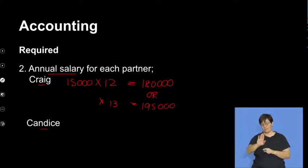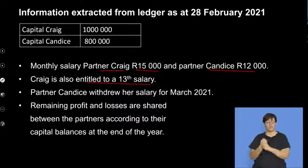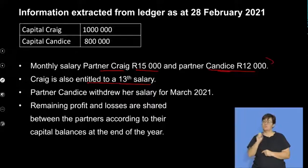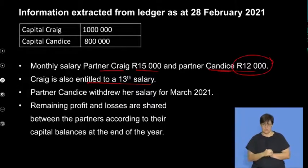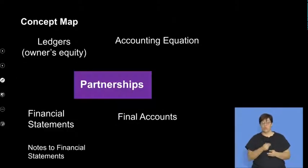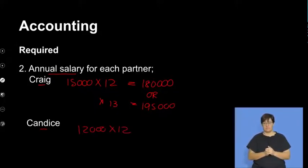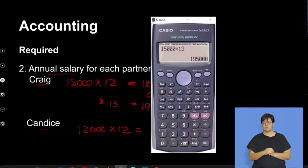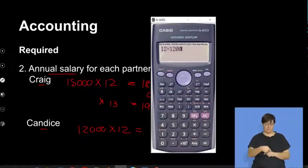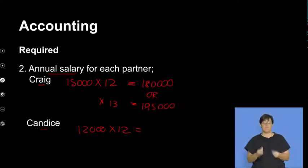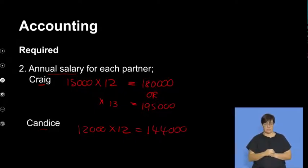Partner Candice, on the other hand — her monthly salary is $12,000. She doesn't get a 13th cheque, so all we're doing is taking the 12,000 and multiplying it by 12. Her annual salary is 12 times 12,000, which gives us an amount of 144,000. Straightforward.